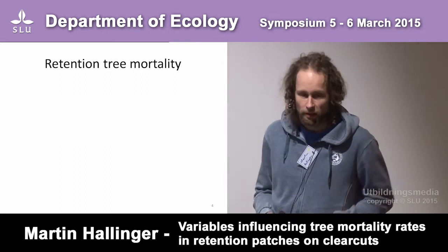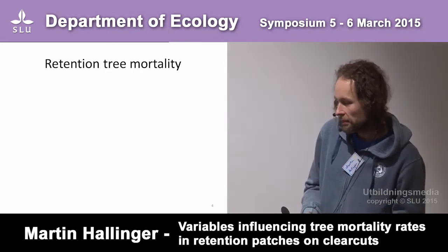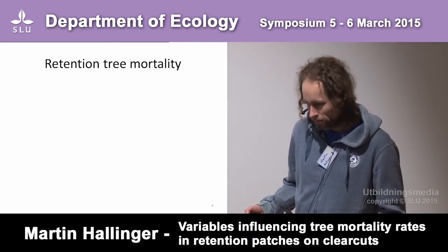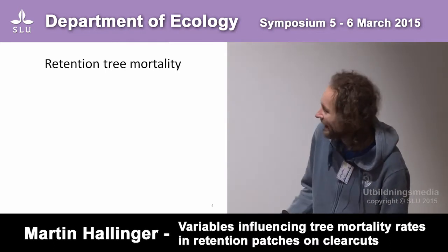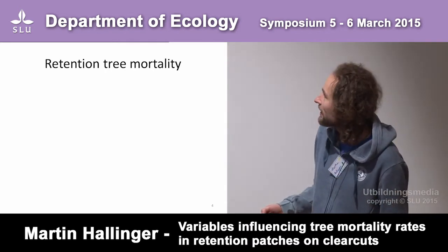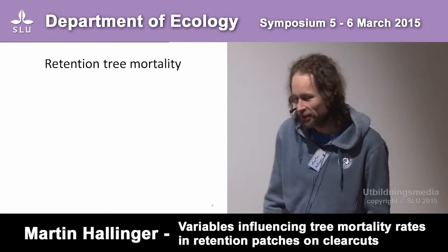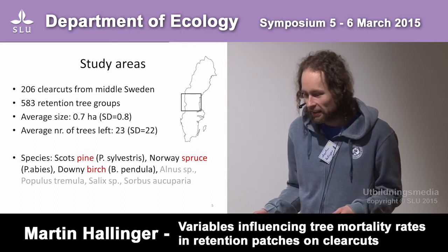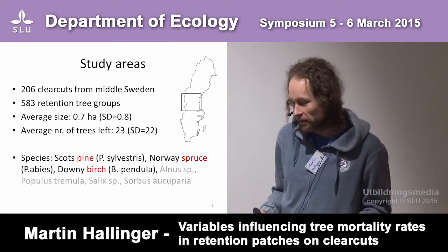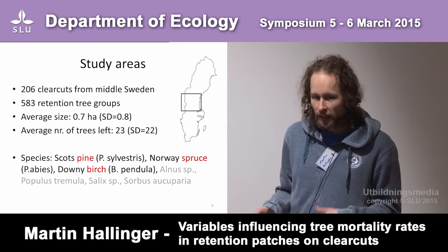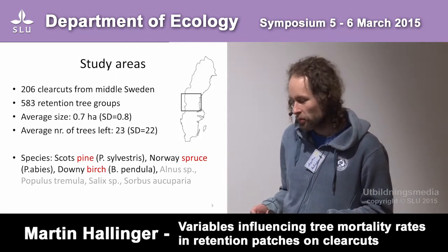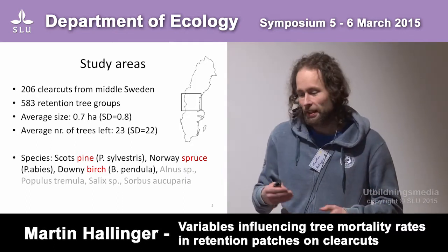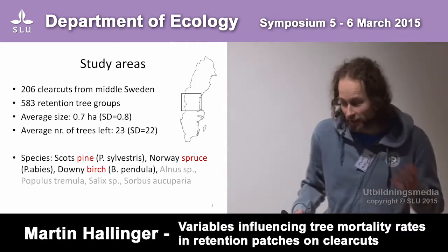We are interested in tree mortality and how it changes over time. What's influencing the tree mortality of these retention trees? And how does it differ among different species of trees? The overarching aim would be: how would you have to construct the ideal retention tree group that is long-living and provides continuous input of dead wood?